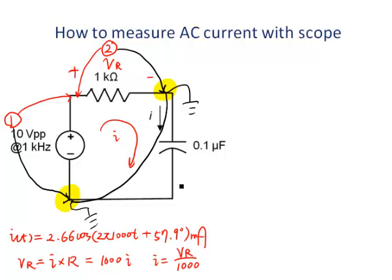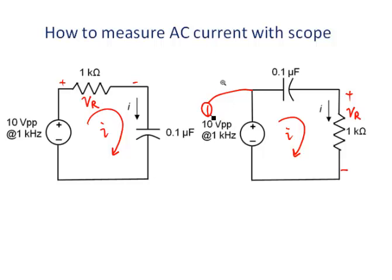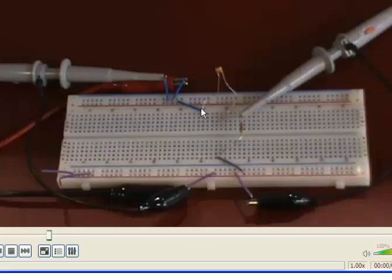We have to figure out another way to measure the voltage across the resistor. Since the resistor and capacitor are in series, if we swap the two components, it won't change the current through them. The same current flows through both components. If the current is still the same, the voltage across the resistor won't change — it is still 1,000 times I. So we can measure the voltage across the resistor in the swapped circuit. We connect the second channel of the scope across the resistor, with the black leads of both channels connected together.